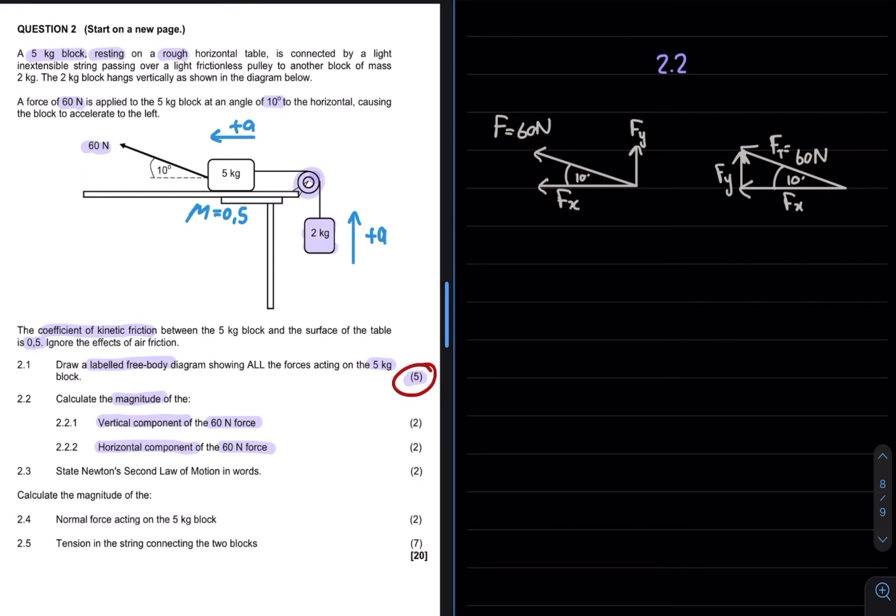This then allows us to apply some trigonometry where we can make use of sine and cos. Remember that the sine of theta is opposite over hypotenuse which is my Fy over my applied force. I can therefore see that the Fy would be equal to the applied force times the sine of theta.